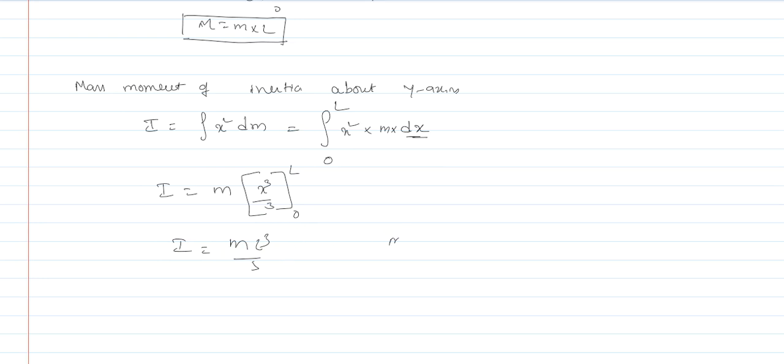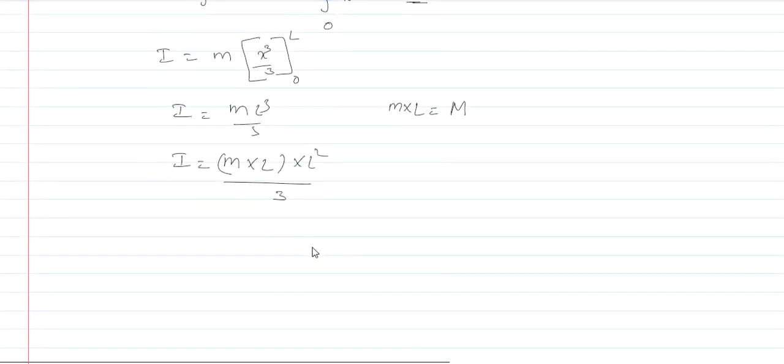We know that small m into capital L is equal to capital M, the total mass. So I is equal to M into capital L into L squared by 3. Instead of small m into L, you can substitute capital M. So I is equal to ML squared by 3. This is the formula for mass moment of inertia.